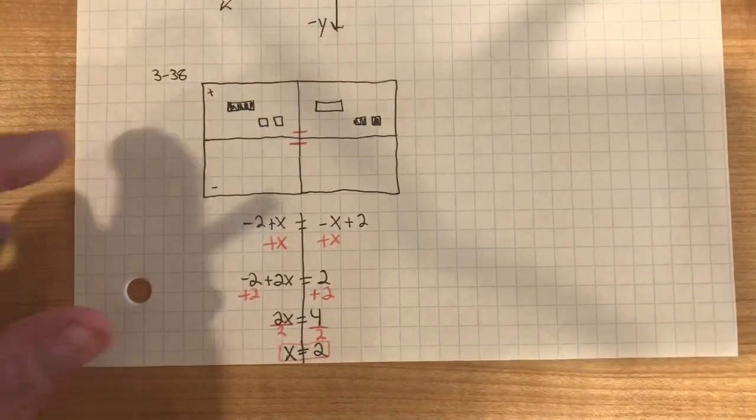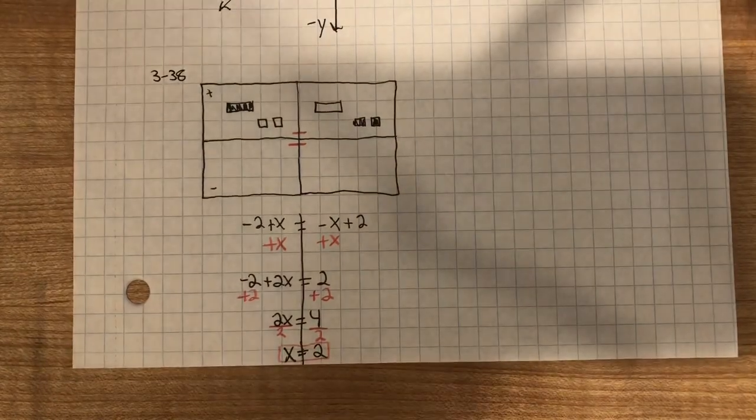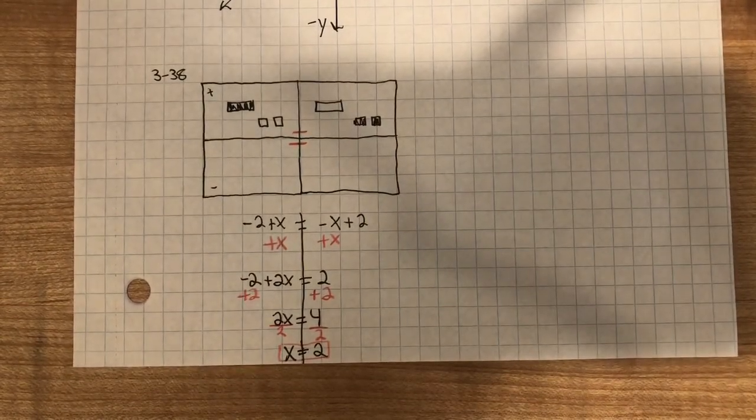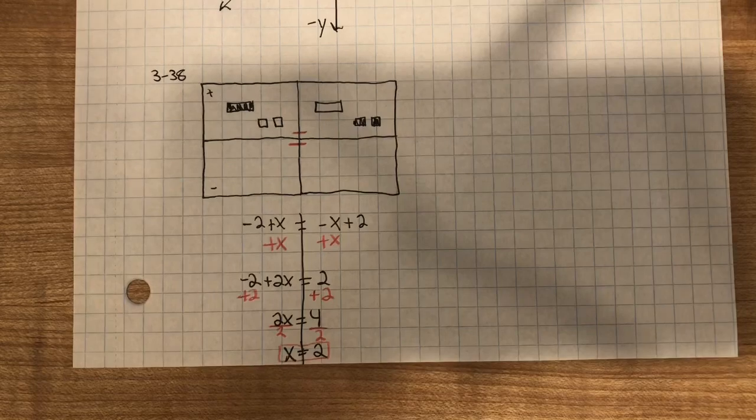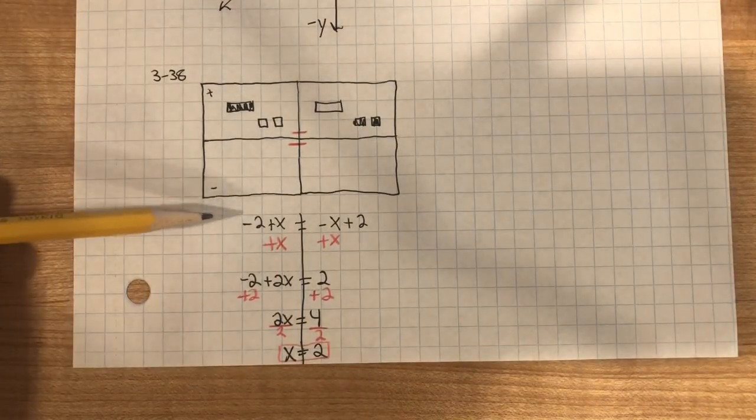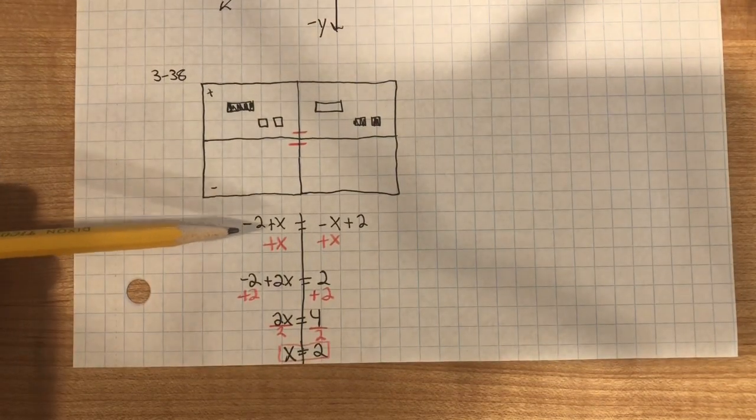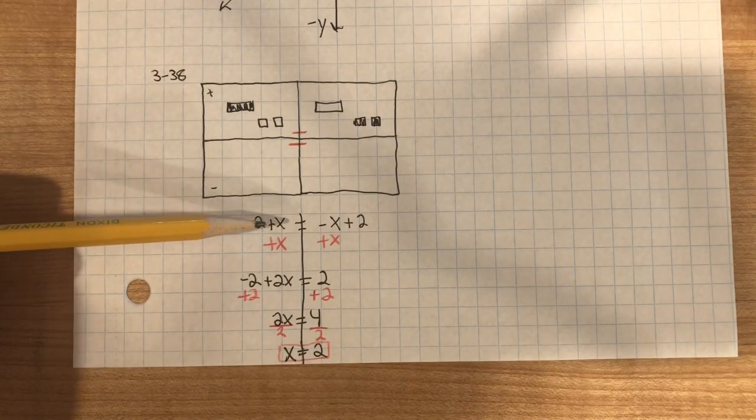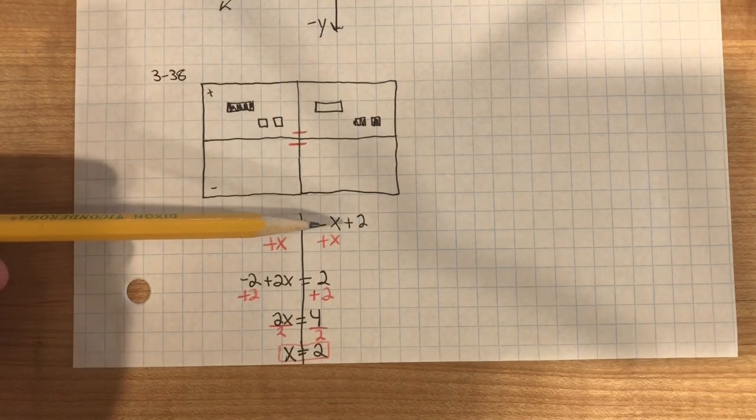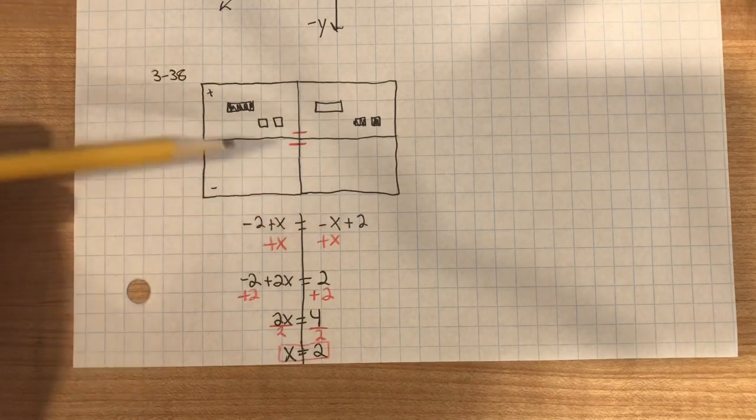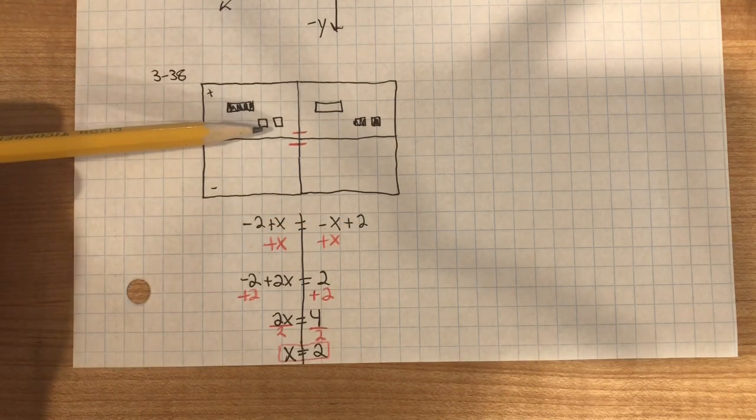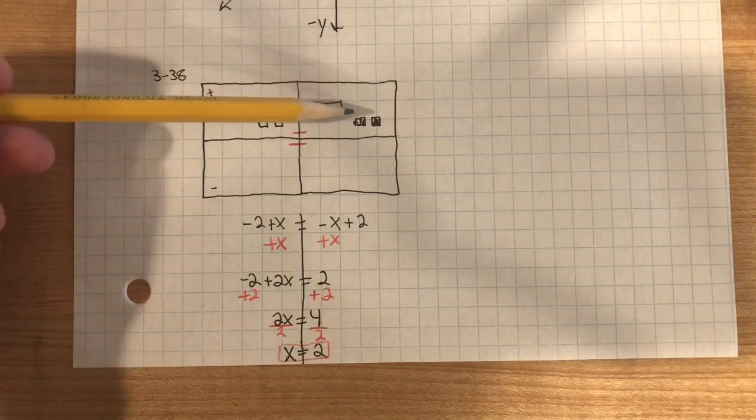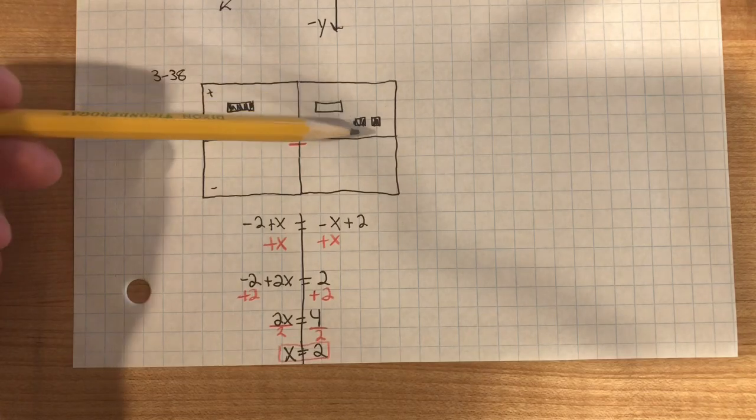Problem 338, you need to draw a picture of the tiles on an equation mat. For the equation, negative 2 plus x equals negative x plus 2. So, two negatives and a positive x. Negative x plus 2.